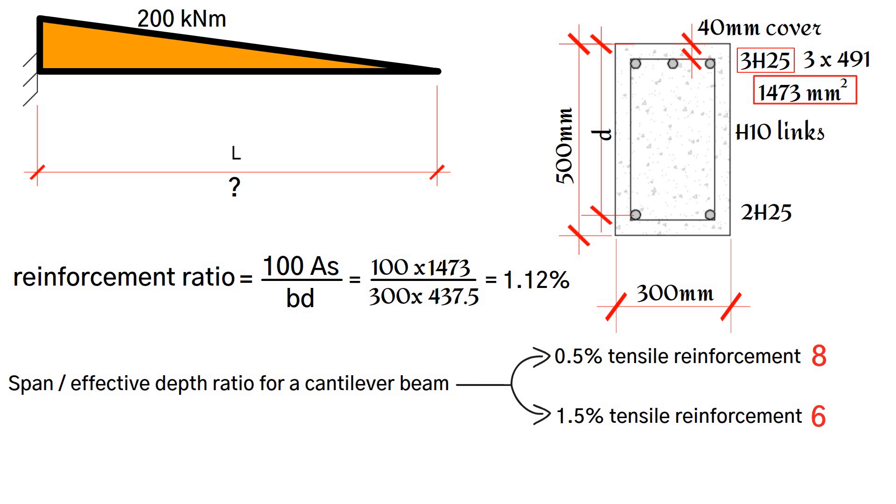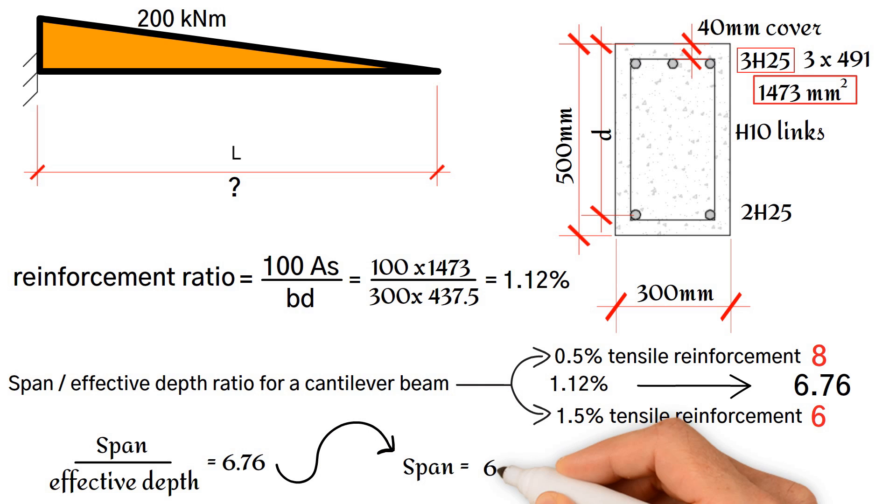The span-depth ratio after interpolation is 6.76. As a result of this, the maximum span is 6.76 times the effective depth of 437.5, which gives a value of 2,960mm.